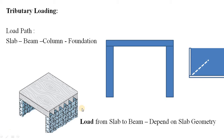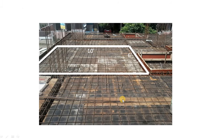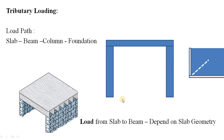In the last video we saw how in a structure your load is transferred from your slab to the beam, then to the column, and next to your foundation. In this video we learn how the load from your slab is actually transferred to the beam. The normal load path is slab to beam, beam to column, column to foundation, and then from foundation to your soil.